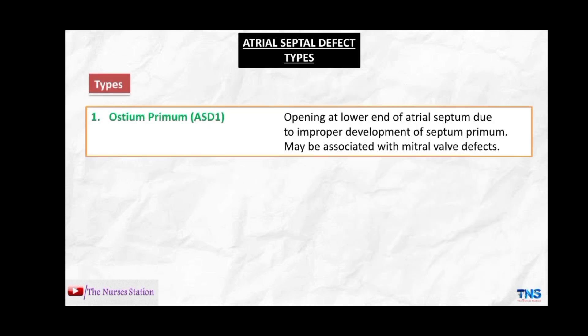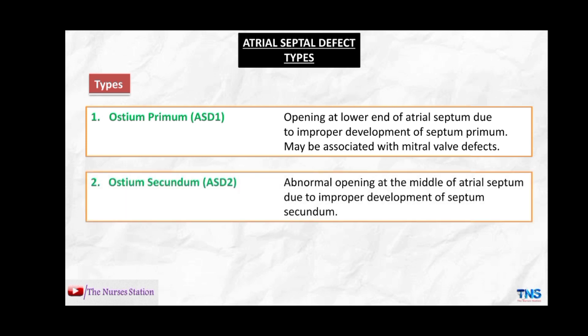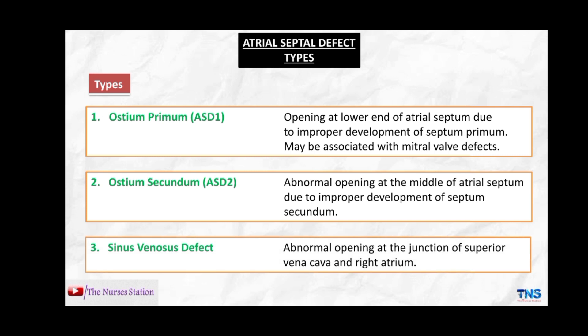The types of atrial septal defect include: ostium primum or ASD1, an opening at the lower end of the atrial septum due to improper development of the septum primum, sometimes associated with mitral valve defects; ostium secundum or ASD2, an abnormal opening at the middle of the atrial septum due to improper development of the septum secundum; and the sinus venosus defect, an abnormal opening at the junction of the superior vena cava and the right atrium.